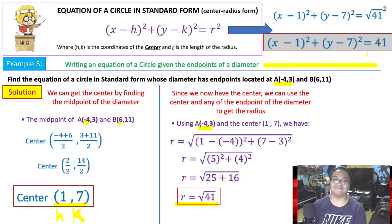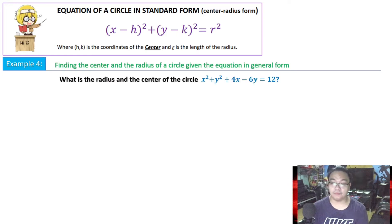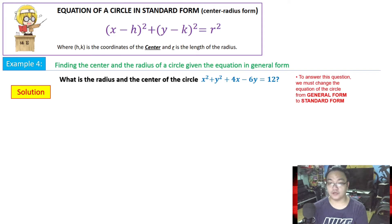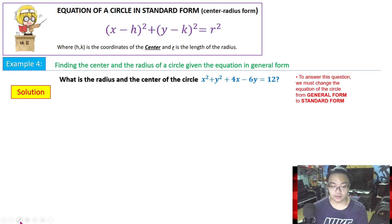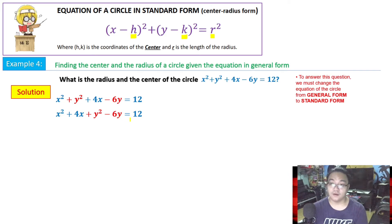Example 4: Finding the center and radius of a circle given the equation in general form. Given: x squared plus y squared plus 4x minus 6y equals 12. To find the center and radius, we must first convert this to standard form. We start by grouping like-variable terms: (x squared plus 4x) and (y squared minus 6y), and moving the constant to the right side.